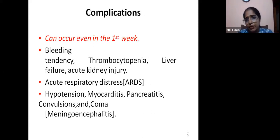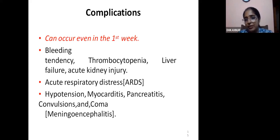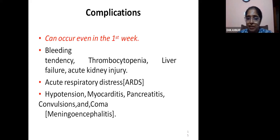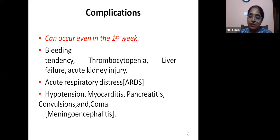Complications can occur in the first week or usually toward the second week. The patient can have bleeding tendency, thrombocytopenia, liver failure, and acute kidney injury. Acute respiratory distress with alveolar hemorrhage is one of the dreaded complications and a cause of mortality. Other complications include hypotension, myocarditis, pancreatitis, convulsions, coma, and meningoencephalitis. The case with myocarditis also had elevated amylase and lipase, indicating pancreatitis.